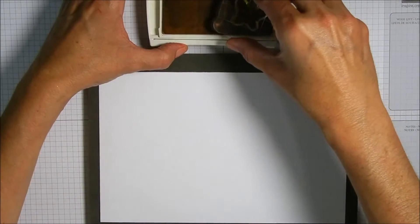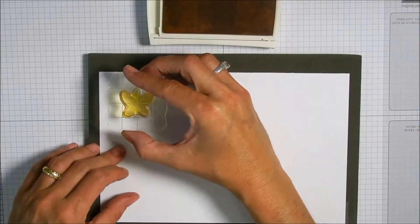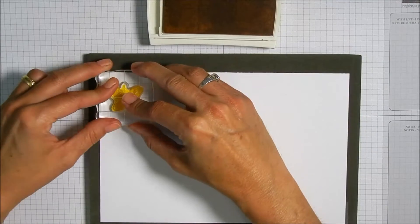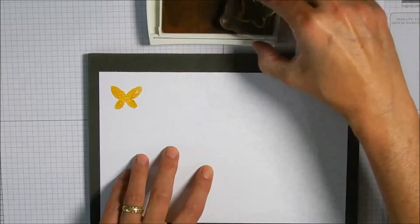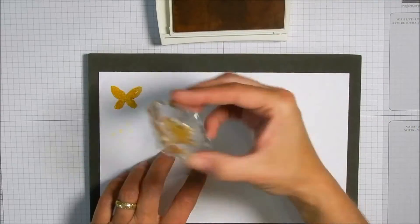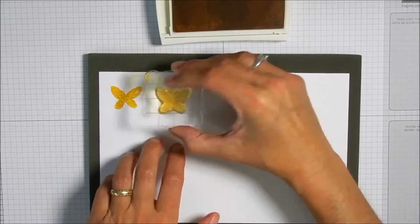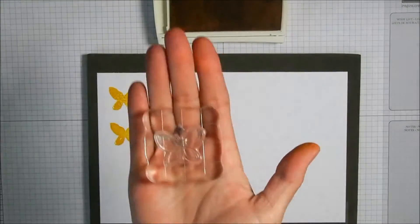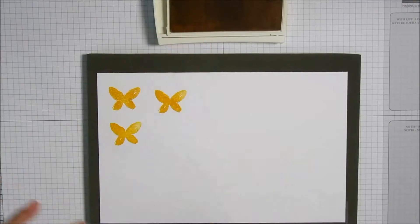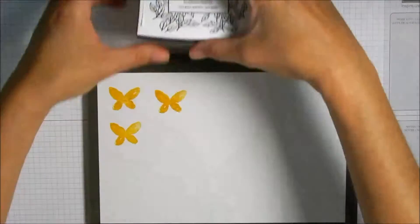I'm going to stamp the butterfly in the Crushed Curry ink and I'm going to put something mat underneath there just because it's a solid image and when I was practicing it wasn't coming out very well without that added cushion. You can use any mat that you personally have or even a piece of fun foam will work.